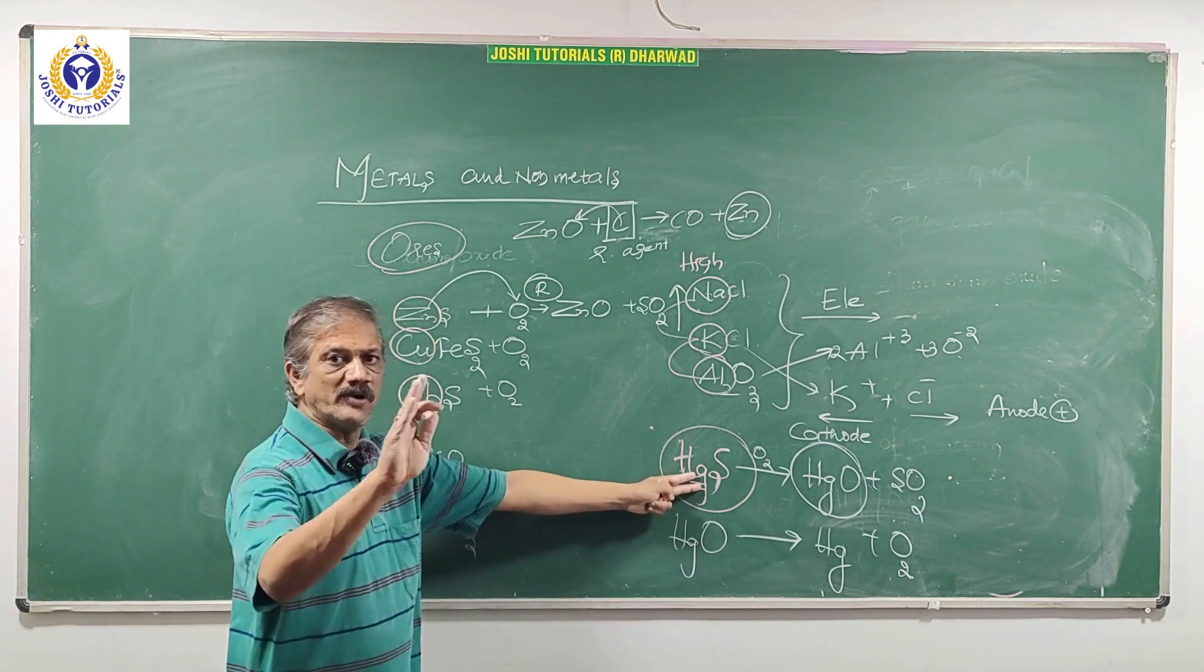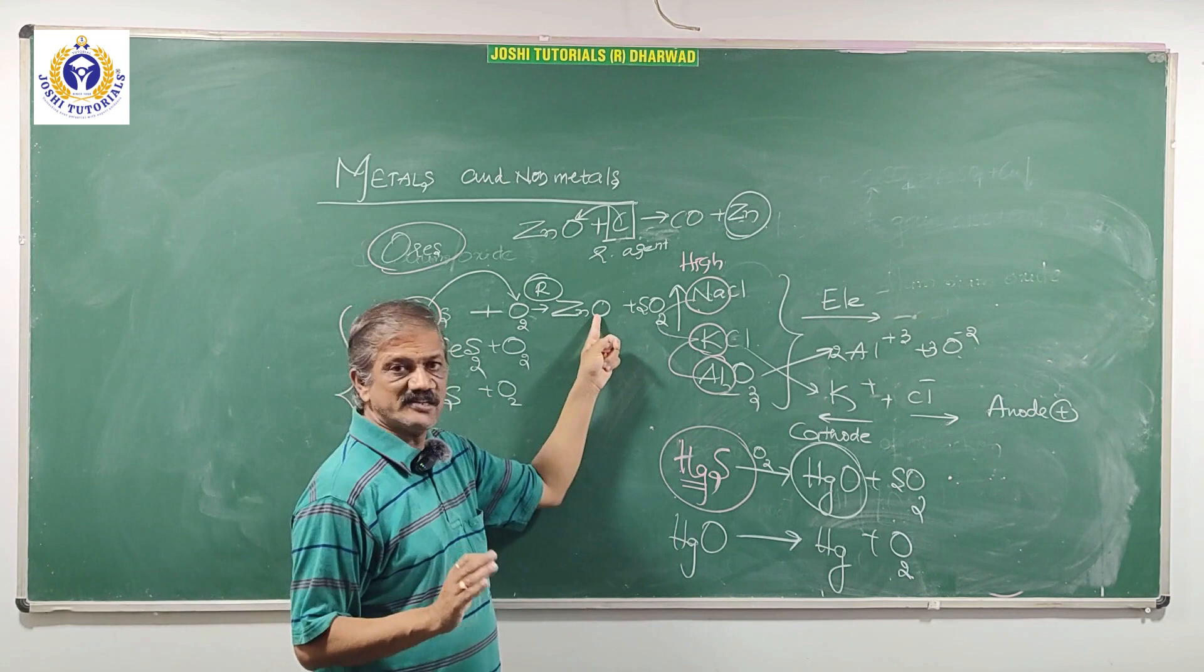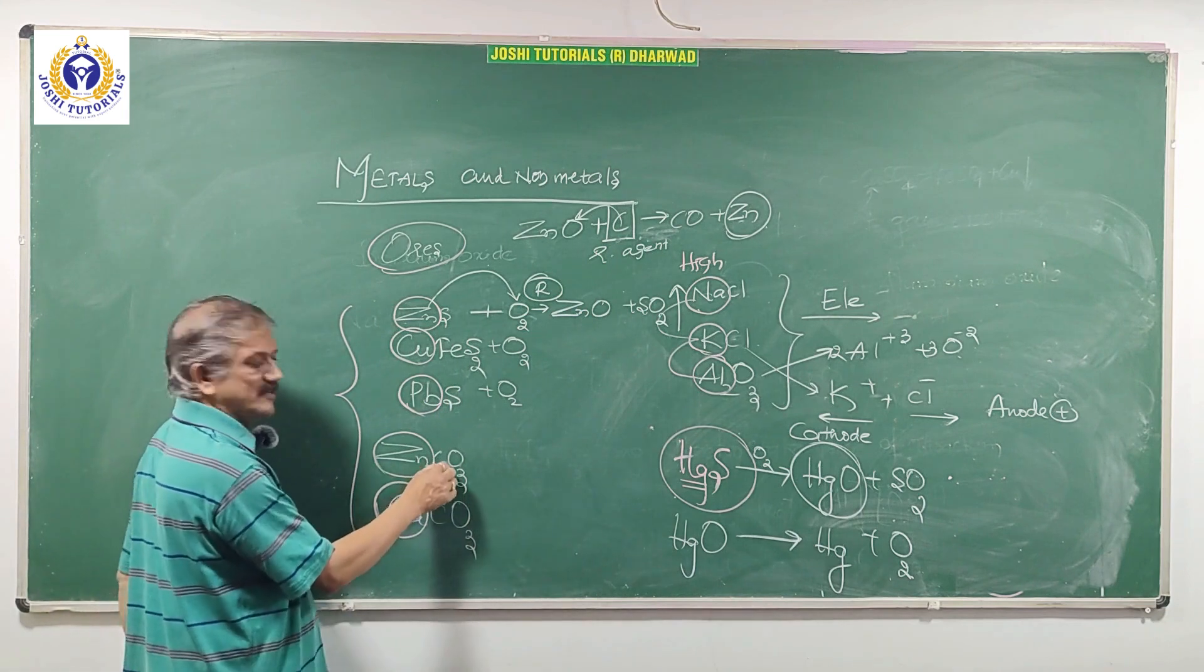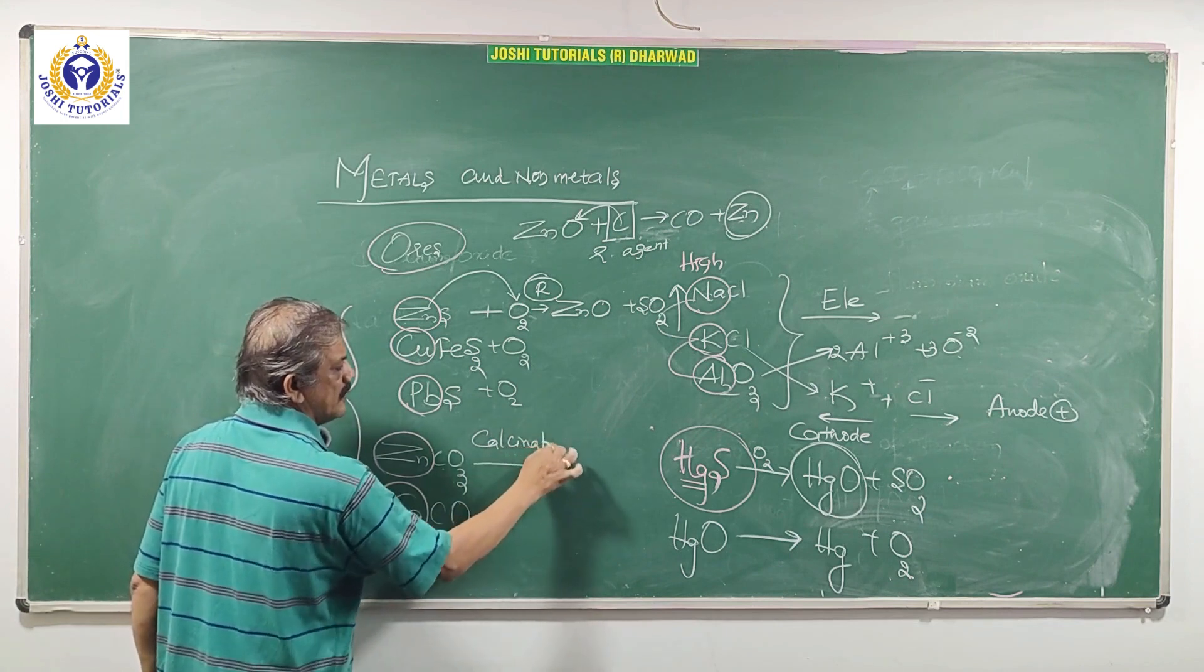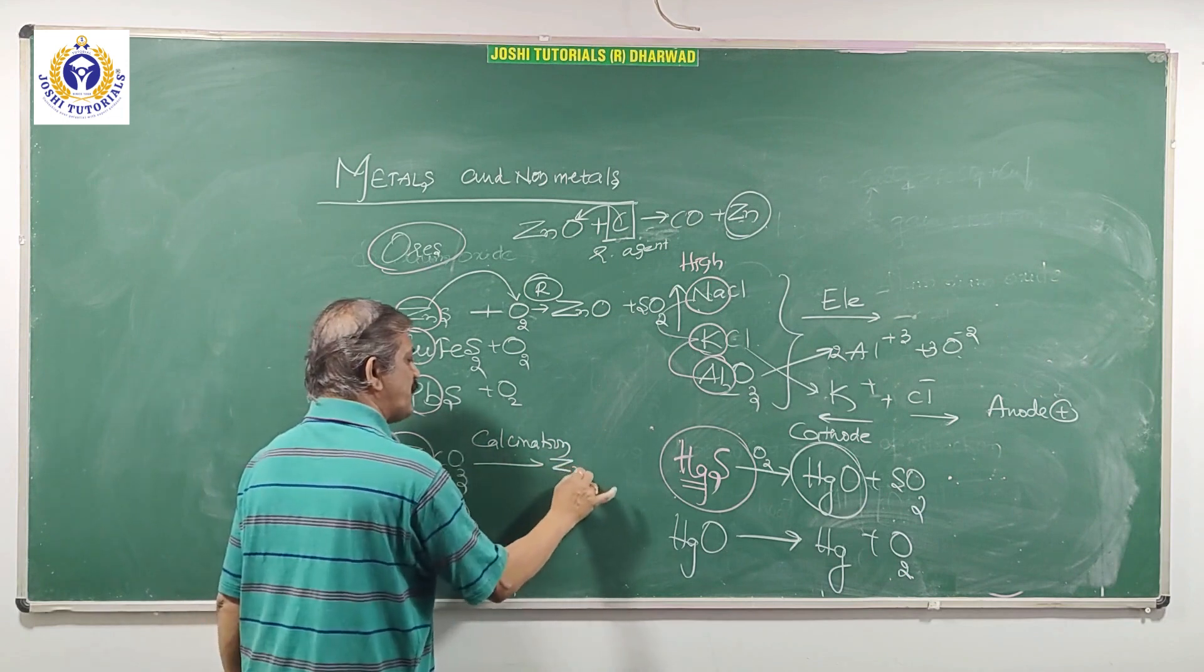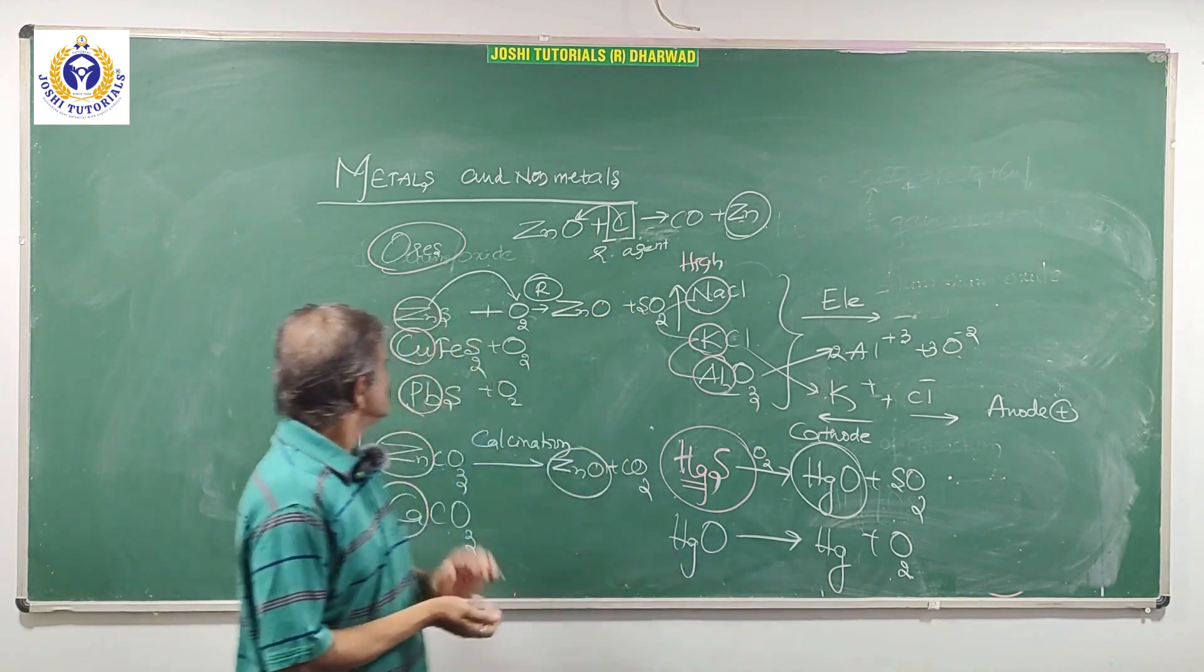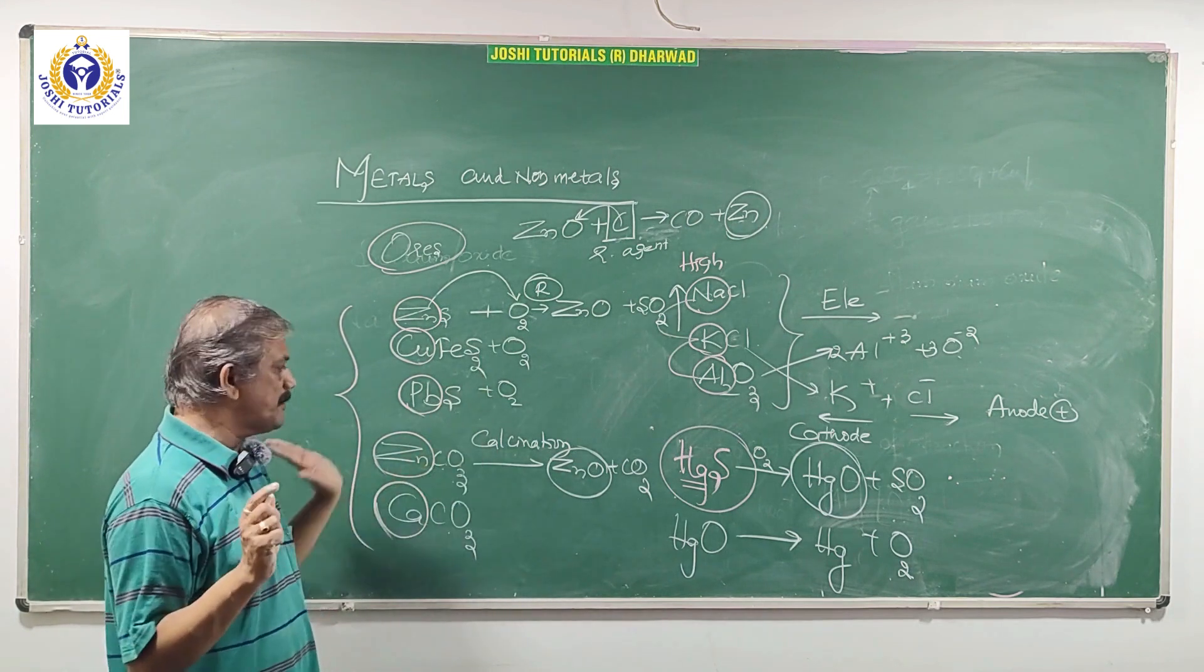Whenever they use the word sulfide, you remember immediately roasting. First convert into oxides, oxides into metal, metal into purification. And if you come across zinc carbonate and this one, it is called calcination. That is, in absence of air or limited supply of air, it forms zinc oxide. Again, see metal oxide. Metal oxide with coke, again what you get? Zinc. Means sulfide ores roasting, carbonate ores calcination. You remember this?